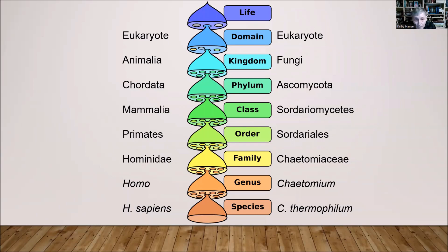Way near the top of the diagram at the domain level, besides eukaryotes, there are two other domains: bacteria and archaea, which are prokaryotes. Neither of them has a membrane-bound nucleus, so they don't have a nuclear pore complex. The evolutionary paradigm holds that all living organisms descended from a single organism at the roots of the tree — this is called the theory of common descent.